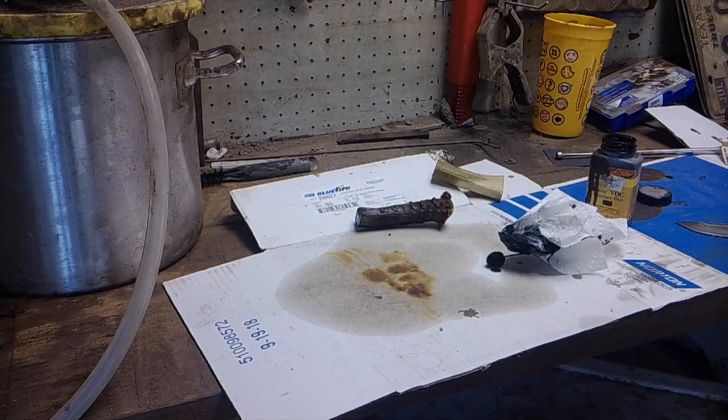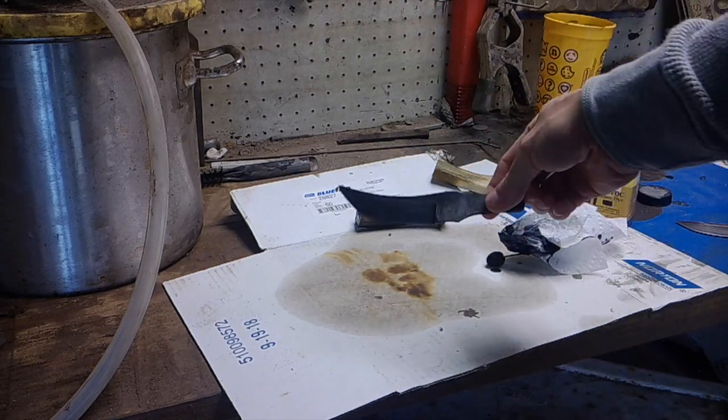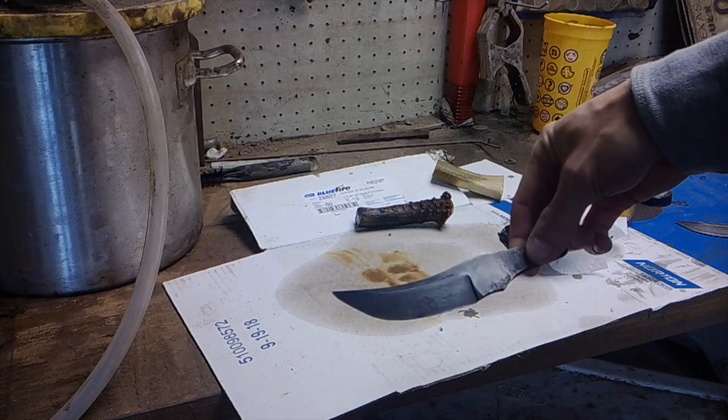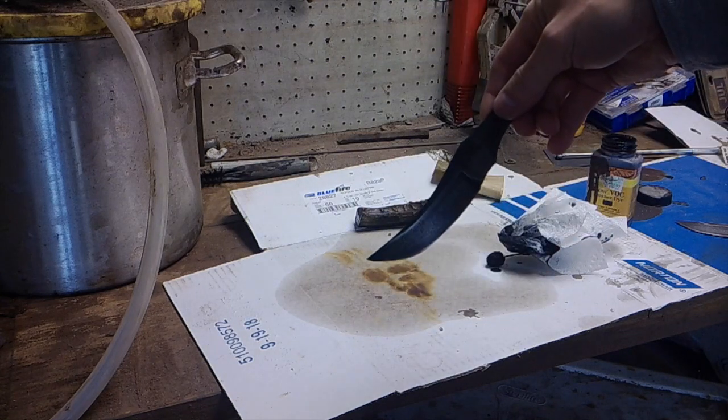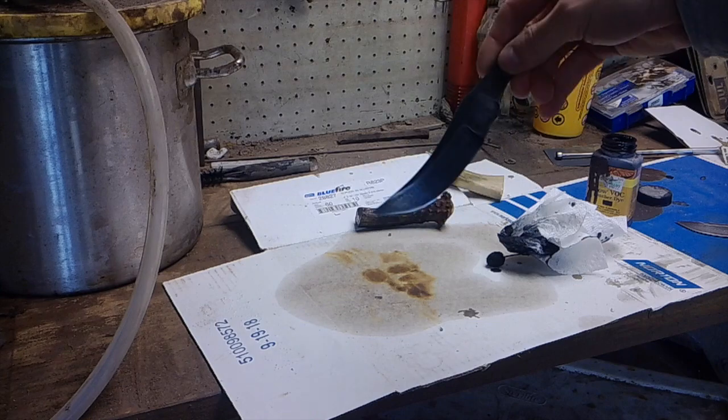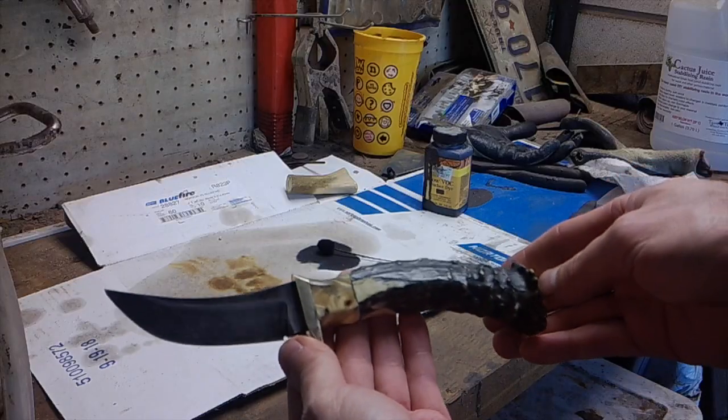Alright, so the next step is to put it on a knife. I've got this little Damascus trailing point style skinner forged up. So here it is finished.